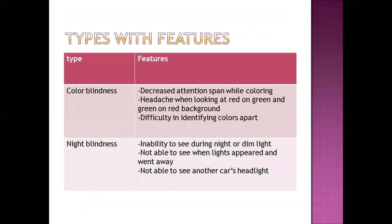There are several types of blindness with distinct features. In color blindness, there is decreased attention span related to color, difficulty identifying colors, and difficulty separating colors. In night blindness, the person is not able to see in dim light or during the night; if that person tries to drive at night, they will not be able to see other vehicles' headlights.